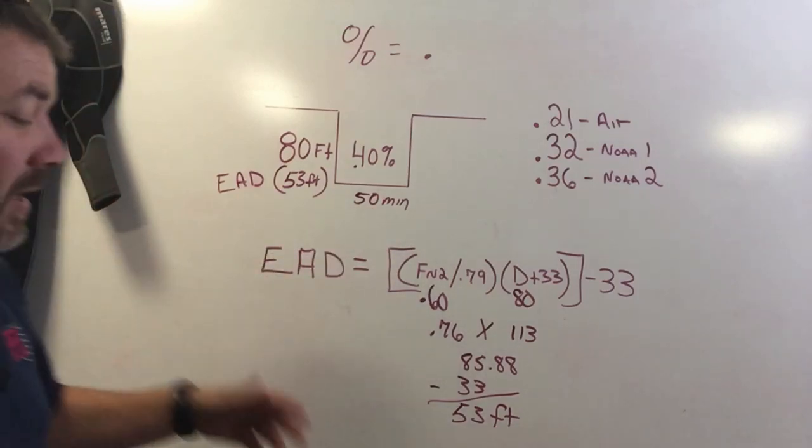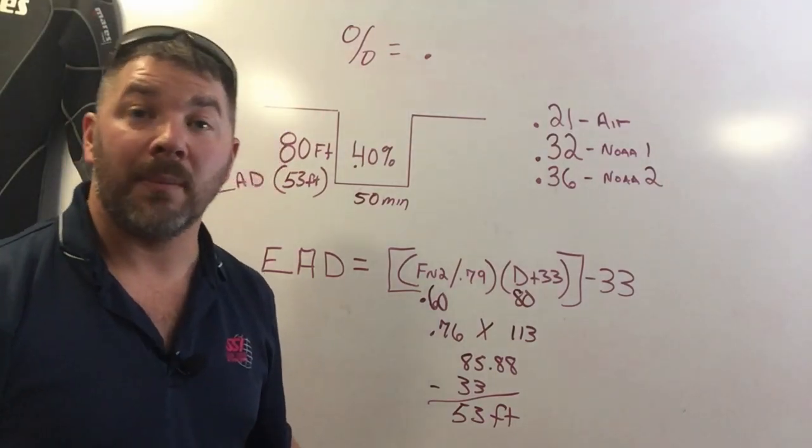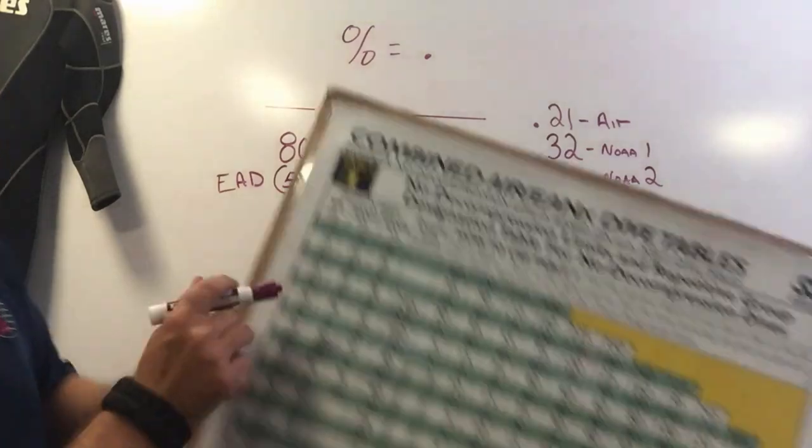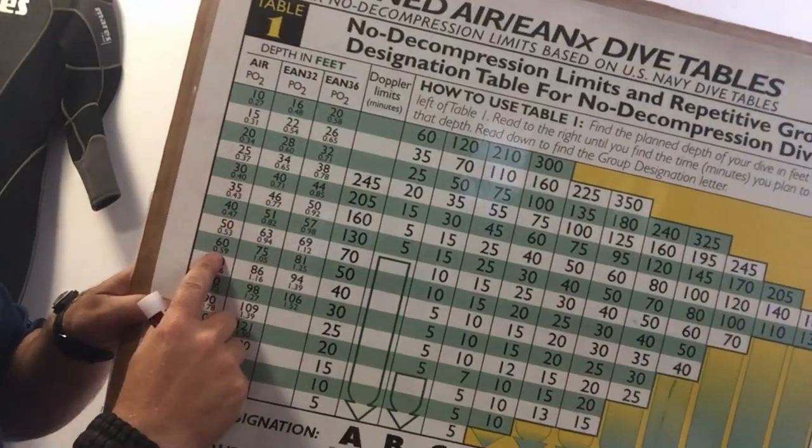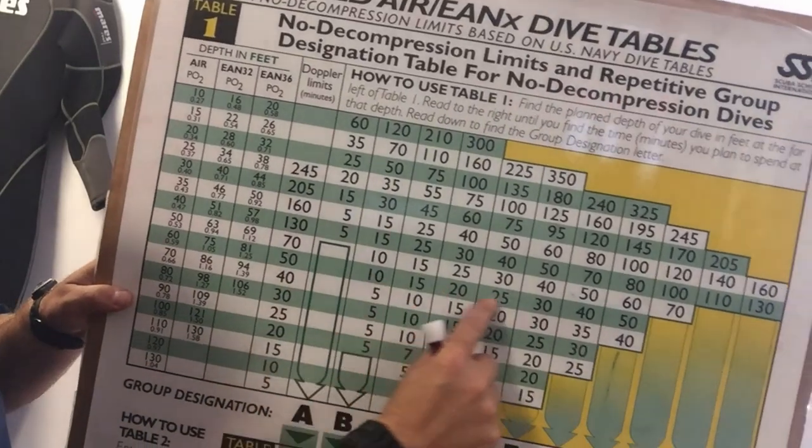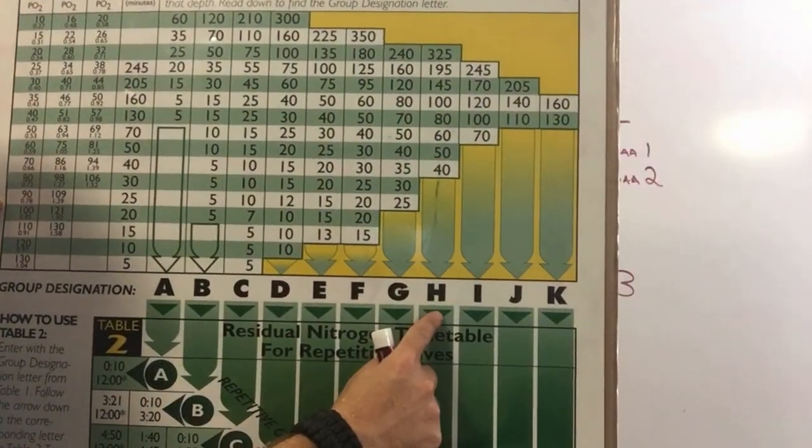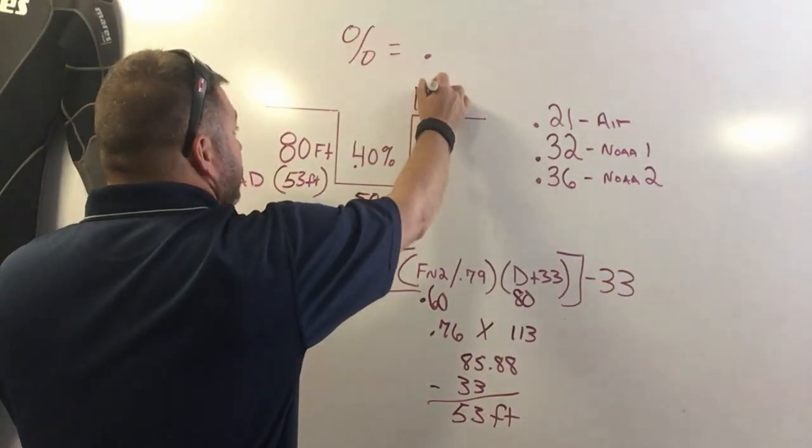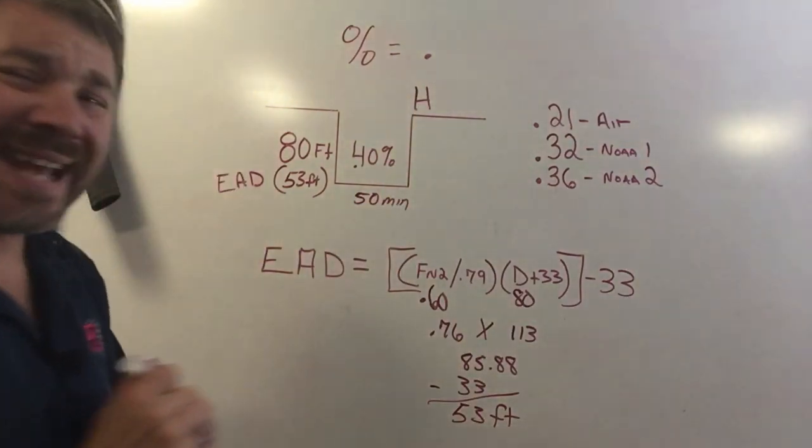Then I can actually calculate what my pressure group afterwards would be. So if I go to 53 feet for 50 minutes, 53 once again rounds up to 60. If I stay a total of 50 minutes, I simply scroll over to 50 here and that's going to give me a pressure group of H. So I'm gonna write that up here as my ending pressure group.